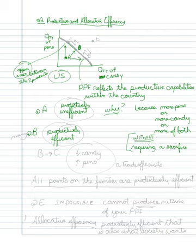B is actually productively efficient. And the way that we know that it's productively efficient is that if I wanted to go to C, B to C would mean less candy, but more pens. See there? We know it's efficient because there is a trade-off. There is a sacrifice. A trade-off exists.